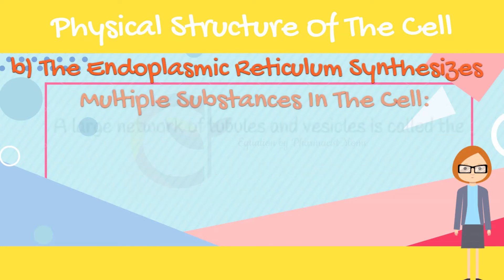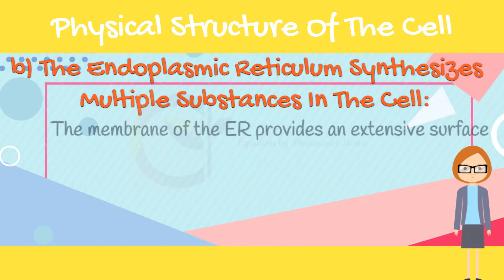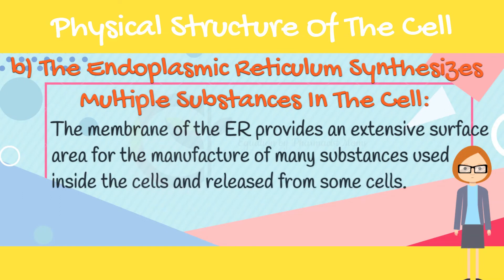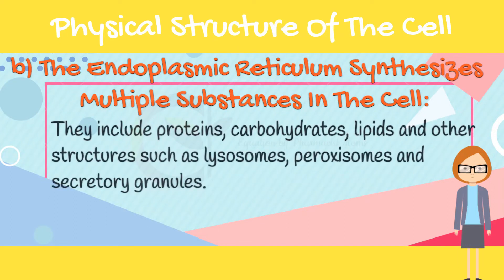The endoplasmic reticulum synthesizes multiple substances in the cell. A large network of tubules and vesicles called the endoplasmic reticulum penetrates almost all parts of the cytoplasm. The membrane of the endoplasmic reticulum provides an extensive surface area for the manufacture of many substances used inside the cells and released from some cells. These include proteins, carbohydrates, lipids, and other structures such as lysosomes, peroxisomes, and secretory granules.